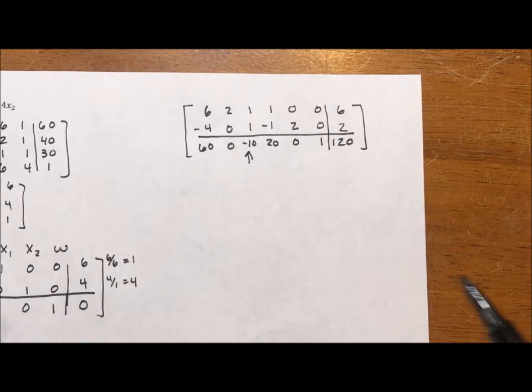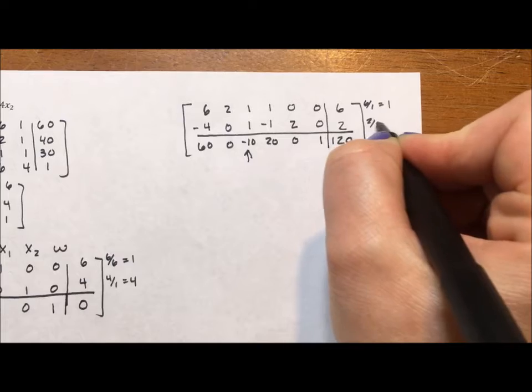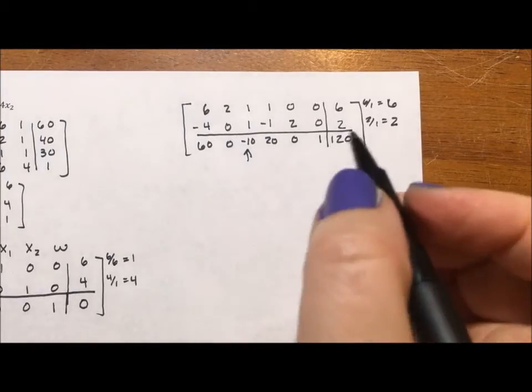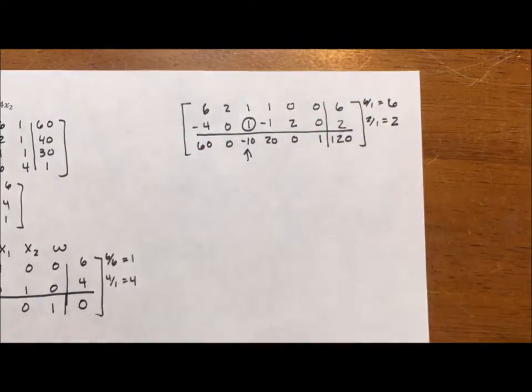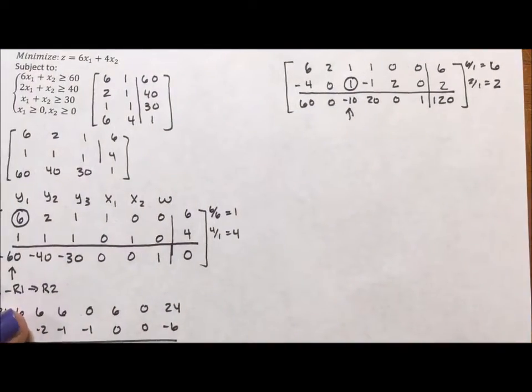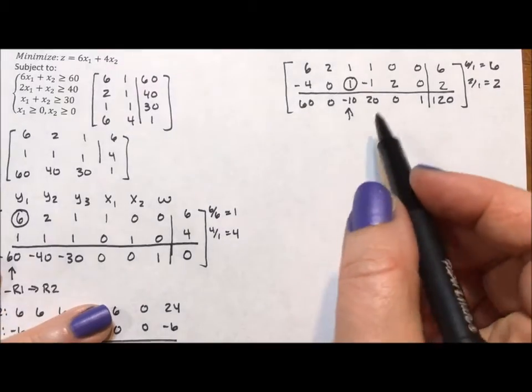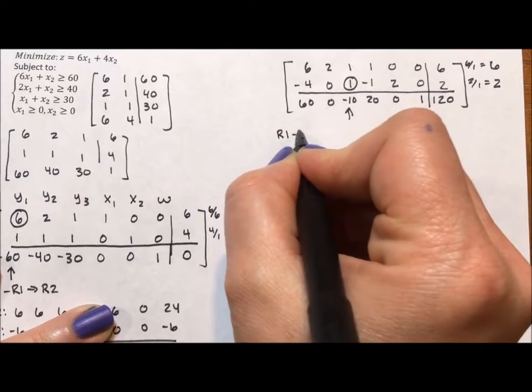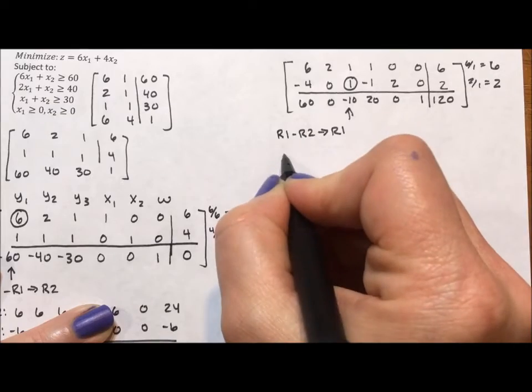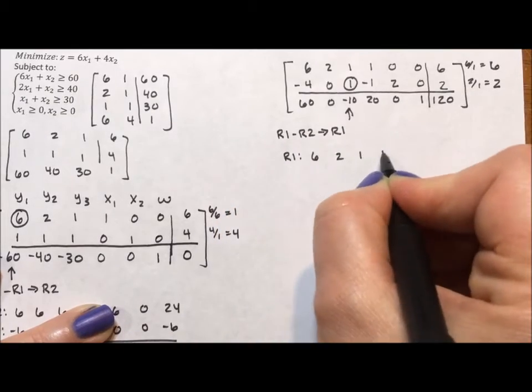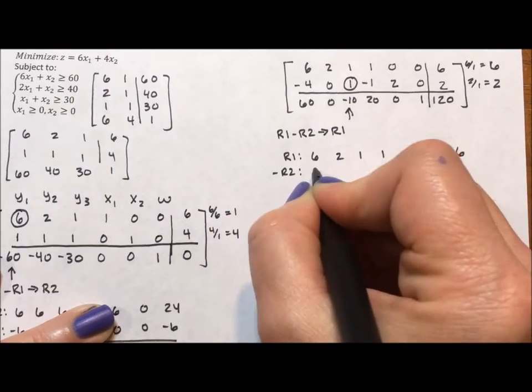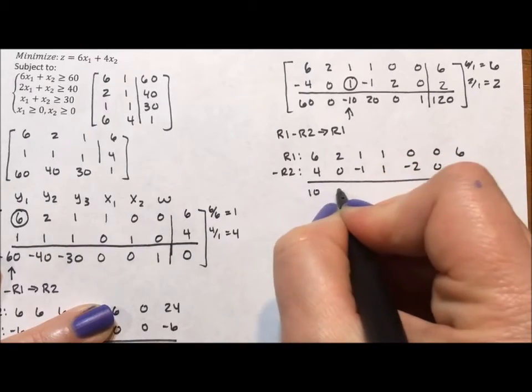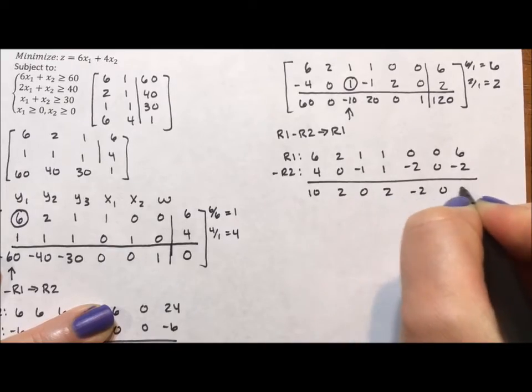So to do this, what I'm going to do again, 6 divided by 1 is 6, 2 divided by 1 is 2, 2 is smaller. So this one right here is going to become my new pivot element. Okay. So I am going to say row 1 minus row 2 to go into row 1. Row 1 is 6, 2, 1, 1, 0, 0, 6 minus row 2 is 4, 0, negative 1, 1, negative 2, 0, negative 2. They will add together to give me 10, 2, 0, 2, negative 2, 0, 4.